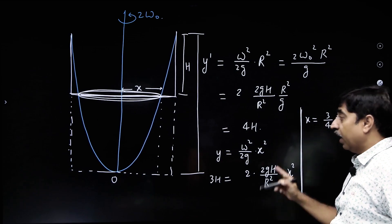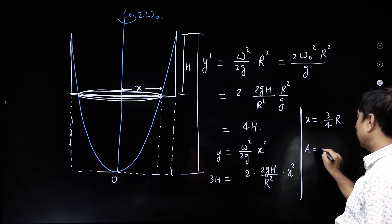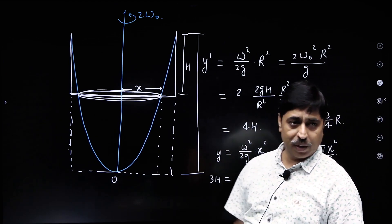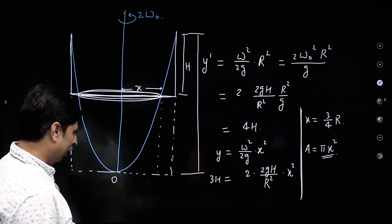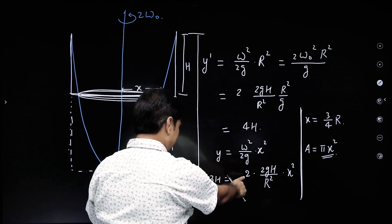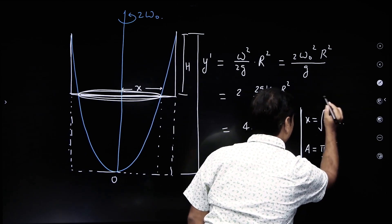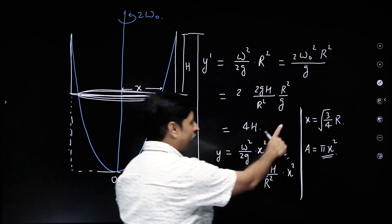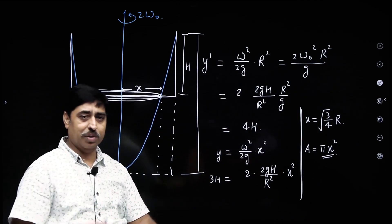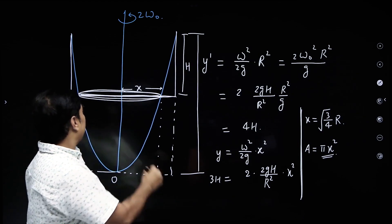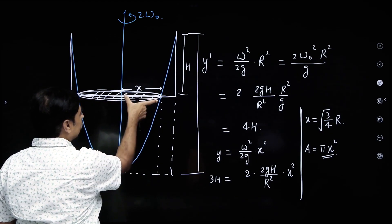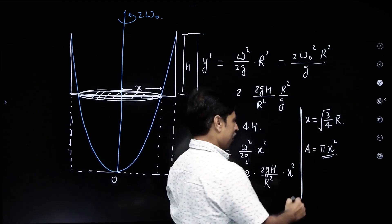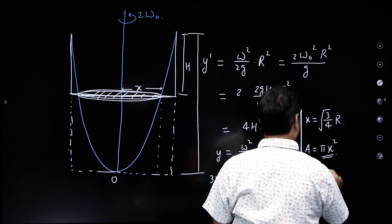The exposed area on the bottom is a circle of radius x = sqrt(3/4)·r. So the exposed area equals pi·x² = pi·(3/4)·r² = (3/4)·pi·r².